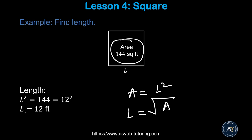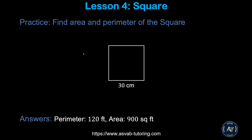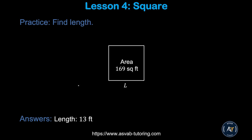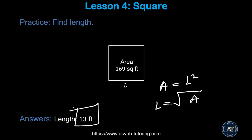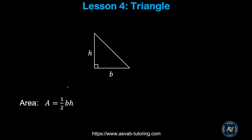Pause the video and try the practice problem by yourself — make sure you get a perimeter of 120 feet and an area of 900 square feet. There is another practice problem where the area is given and you have to find the length. Since area equals l squared, l equals the square root of the area. In that case, the length is 13 feet.